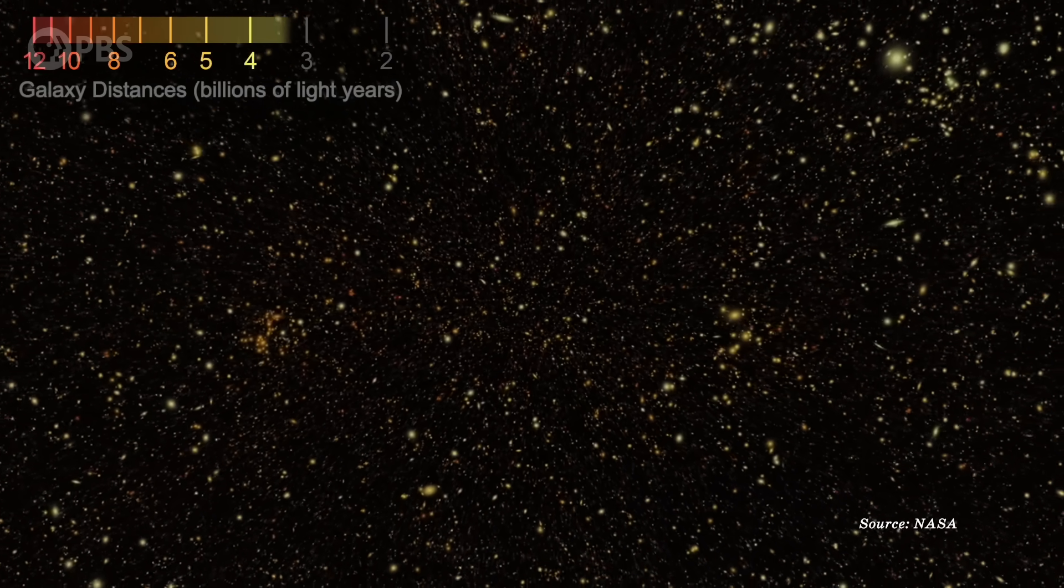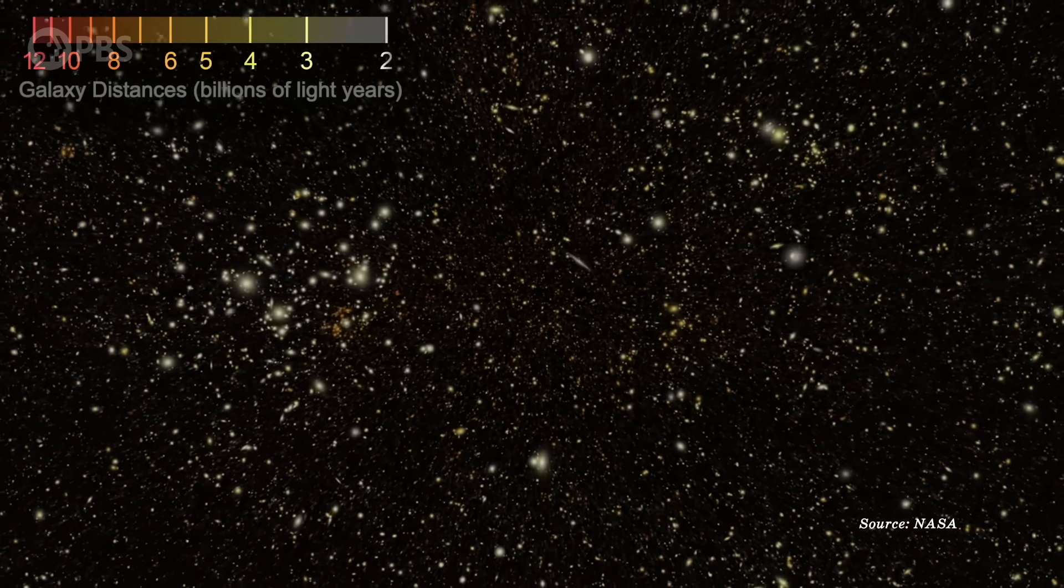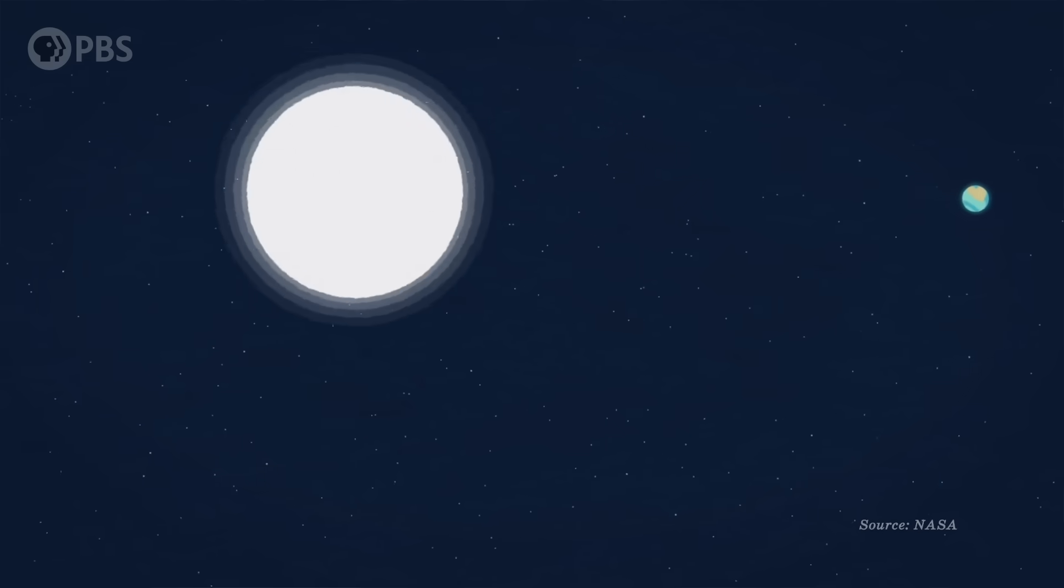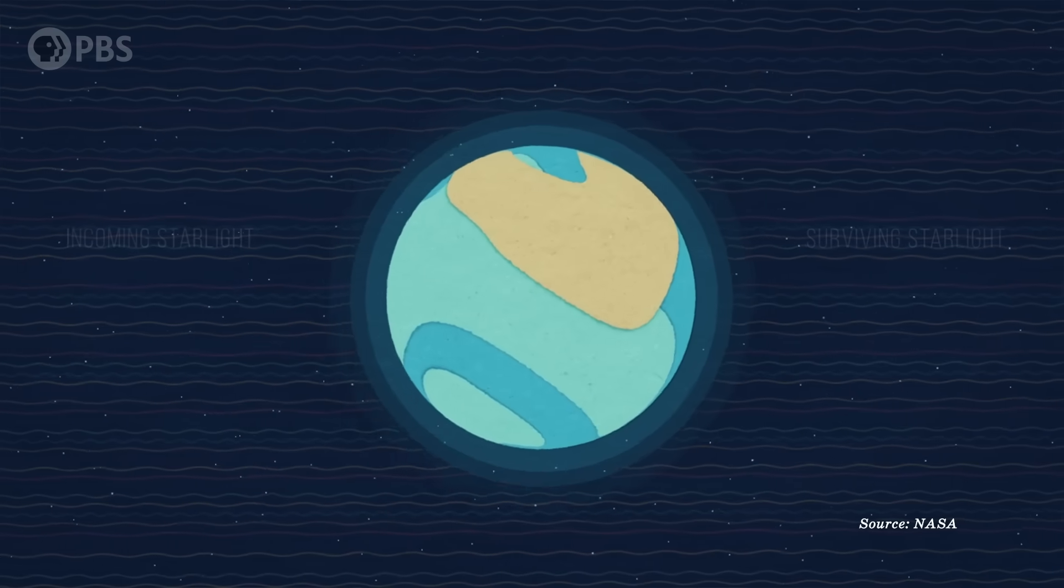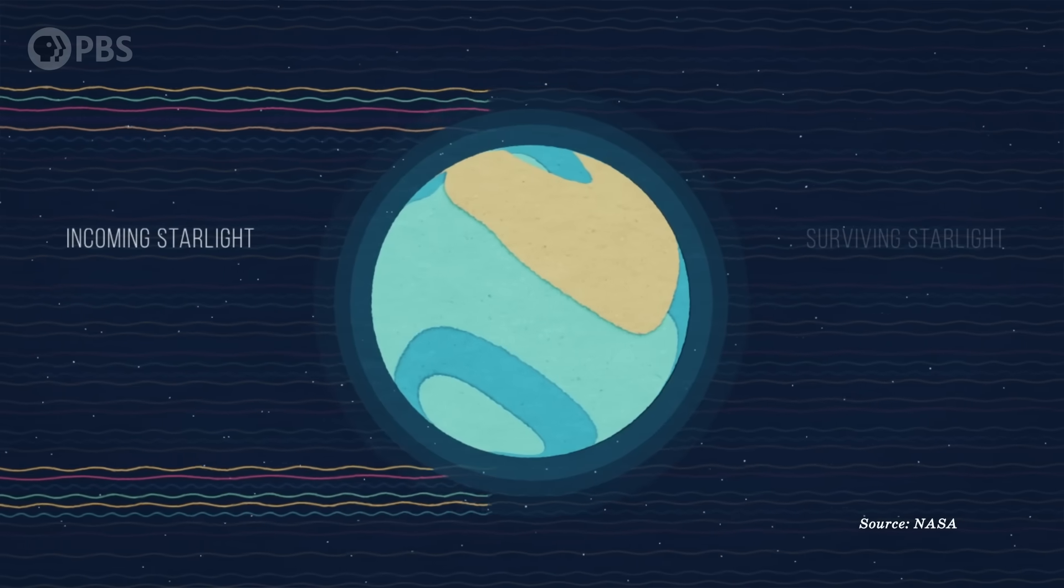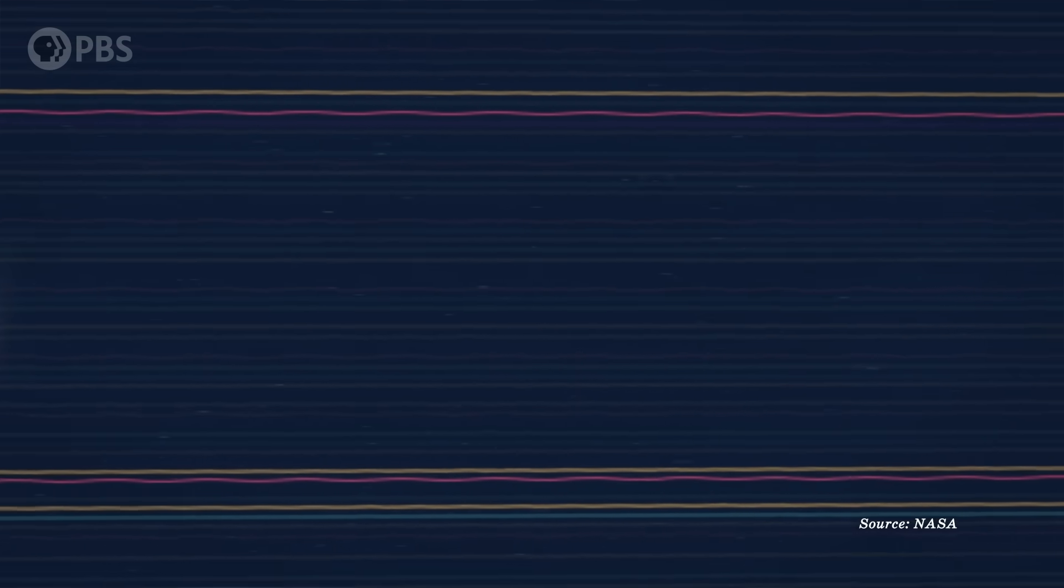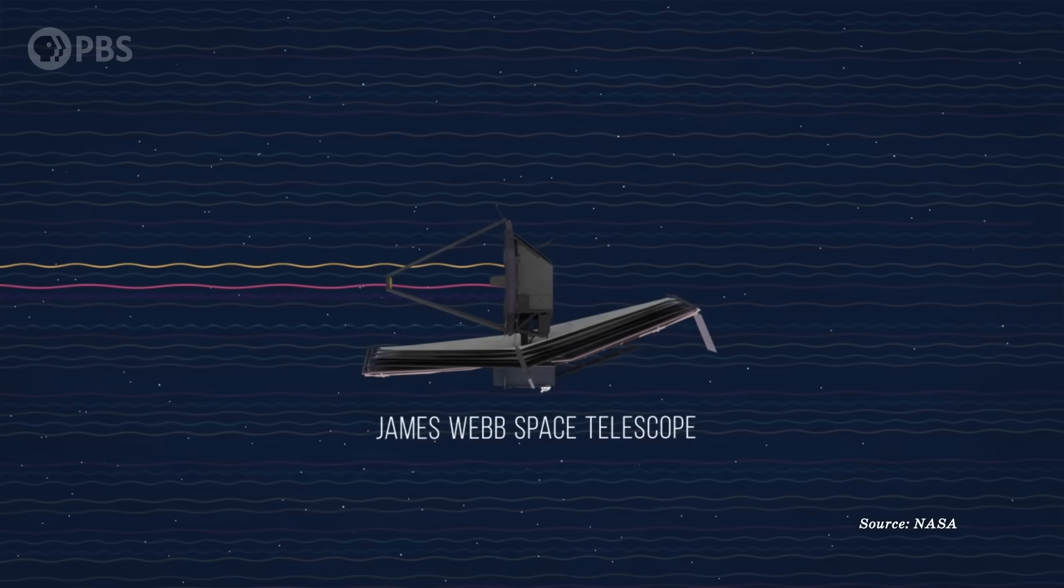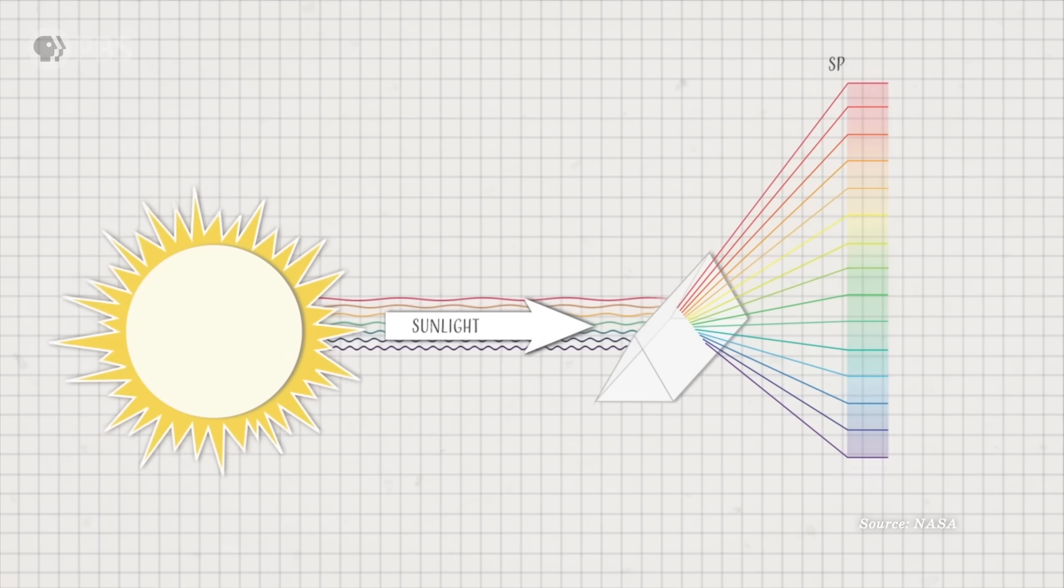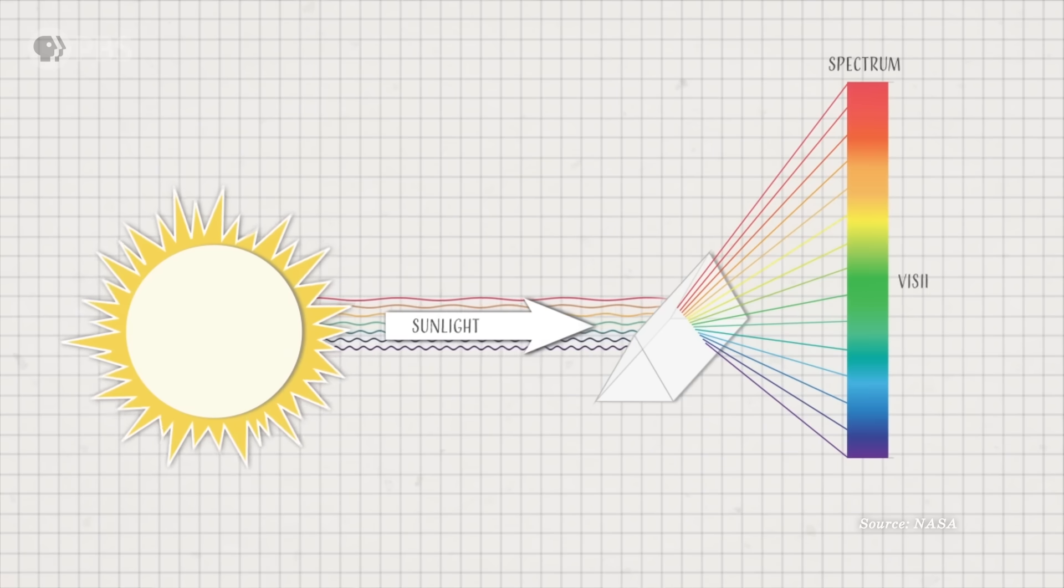Today, this missing rainbow code is even helping us in our search for life beyond Earth. As exoplanets cross in front of their stars, we can look at the starlight that filters through the exoplanet's atmosphere. New dark lines will appear in the star's spectrum as the planet crosses in front, and they correspond to the elements and chemical compounds in the planet's atmosphere.